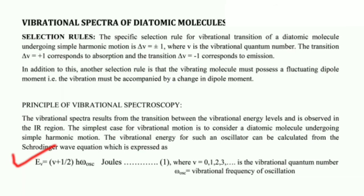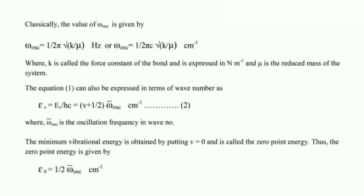Classically, omega_osc is given by omega_osc = (1/2π) × sqrt(k/μ) in hertz, or omega_osc = (1/2πc) × sqrt(k/μ) in cm⁻¹, where k is the force constant of the bond expressed in Newton per meter and μ is the reduced mass of the system.